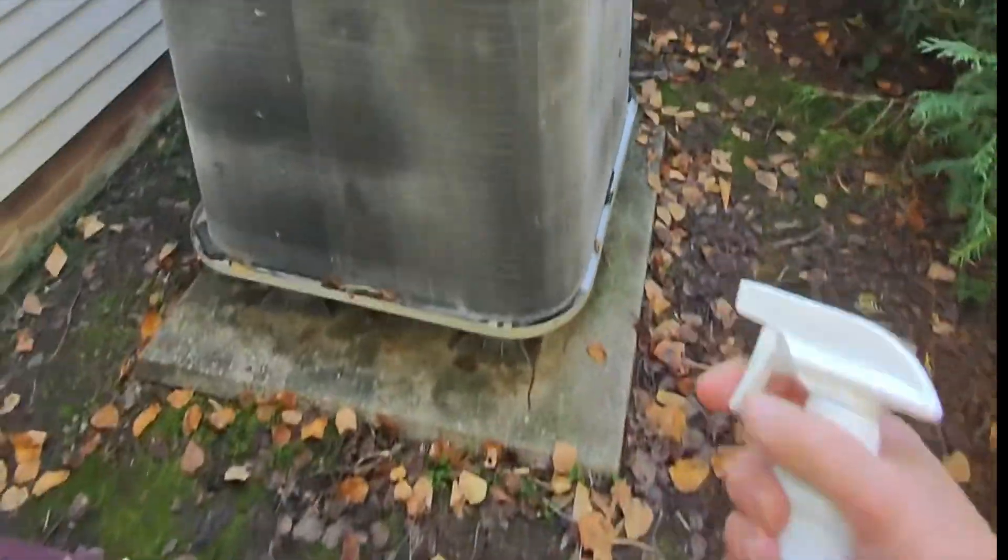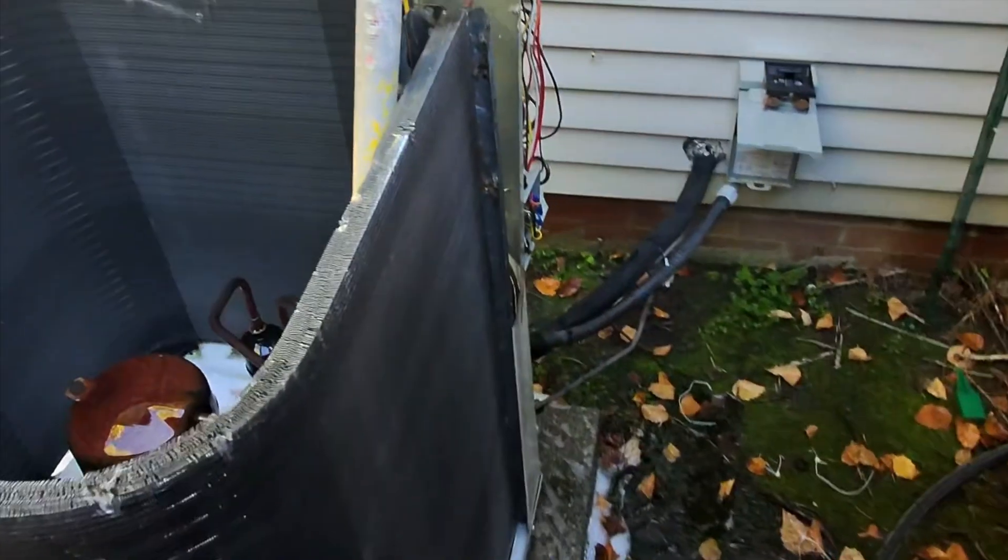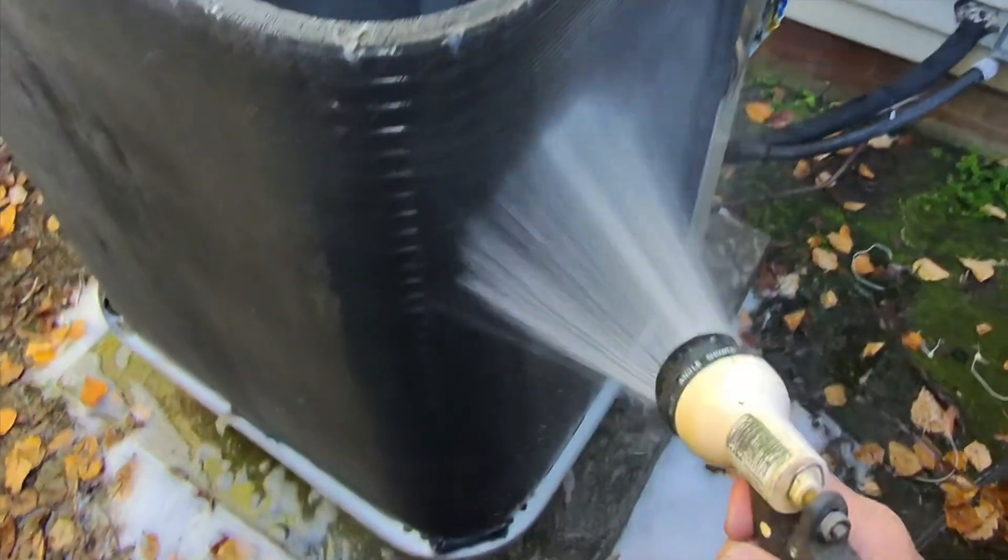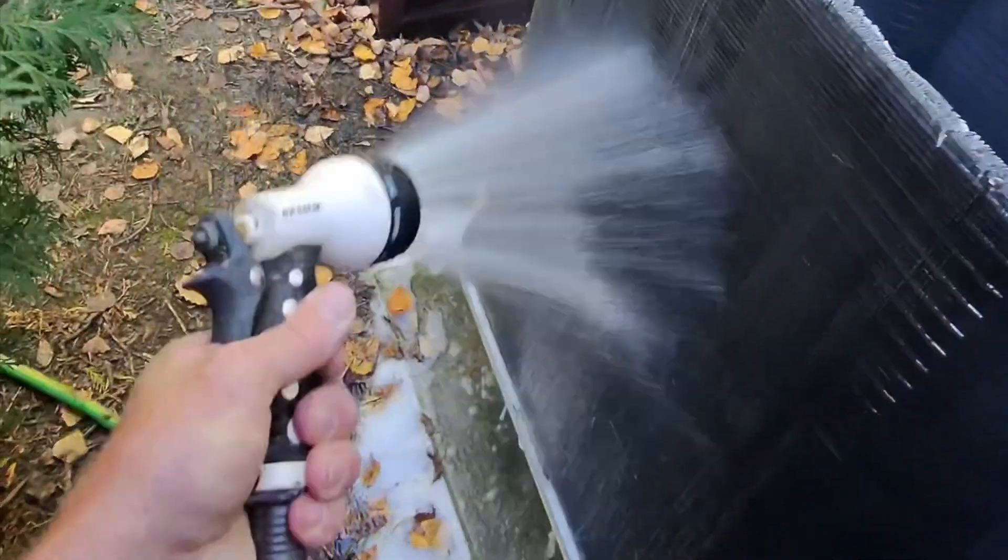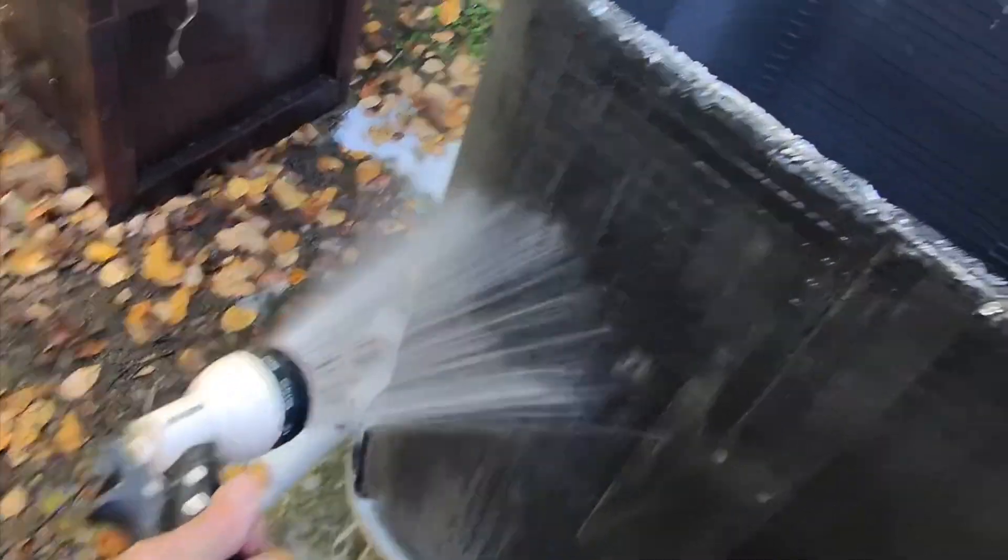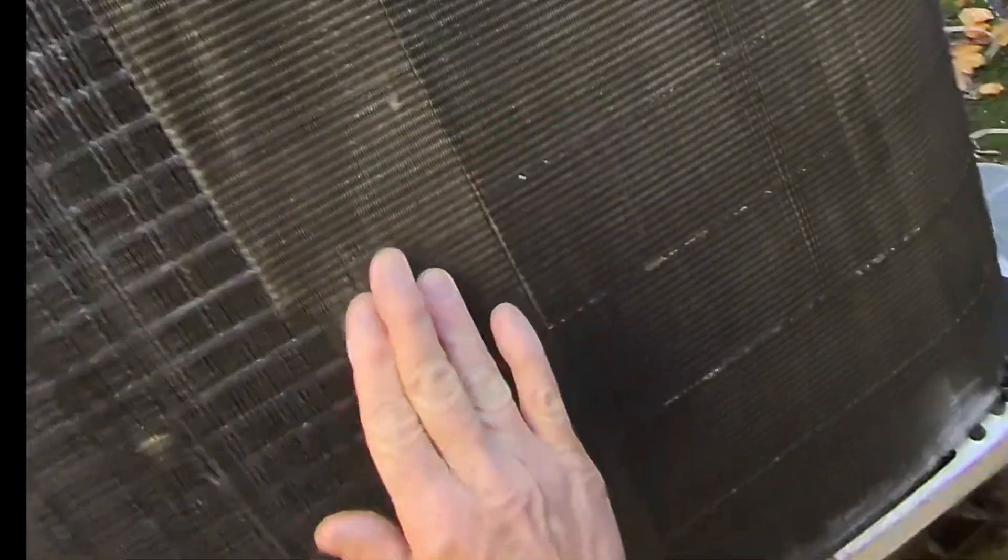All right, so we're going to use this coil cleaner. We're just going to give it a good spray all the way around. This says to let it sit for three to five minutes. I just want to take a real close look at this and see if I see any sign of any kind of mineral buildup. And as a result of water being evaporated off and leaving the minerals behind. And I really don't. I don't see anything at all. There's just no sign of that.